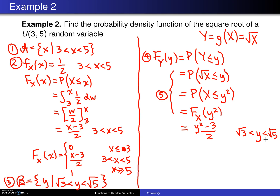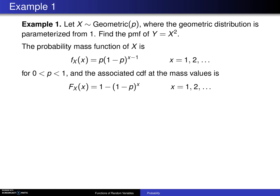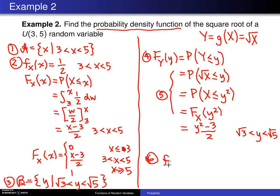Step 6 — since this question asks for the probability density function — is to differentiate the CDF. The PDF f sub Y of y is the derivative of (y² − 3)/2. The derivative of y² is 2y, so you are left with f_Y(y) = y, for y values between the square root of 3 and the square root of 5.